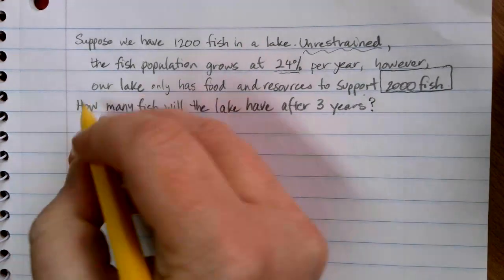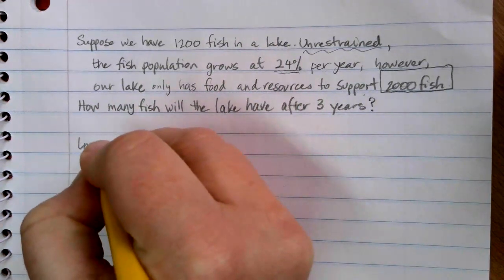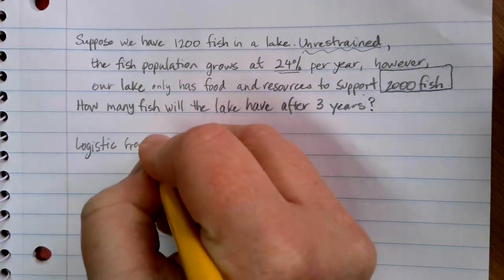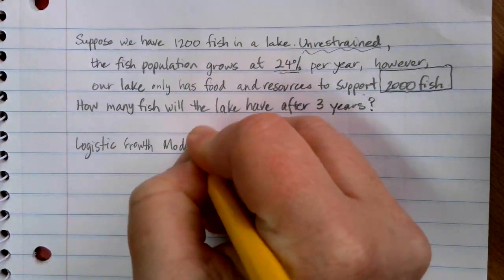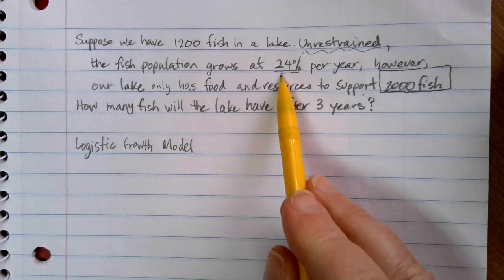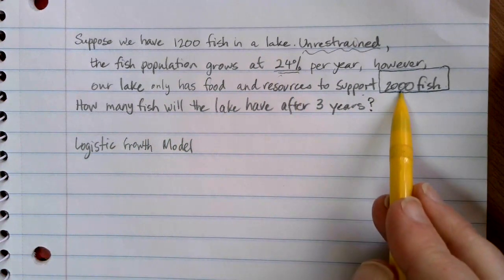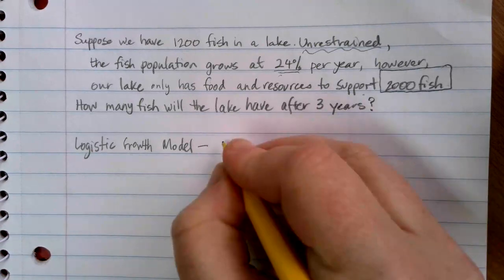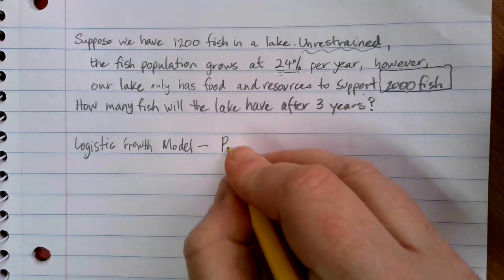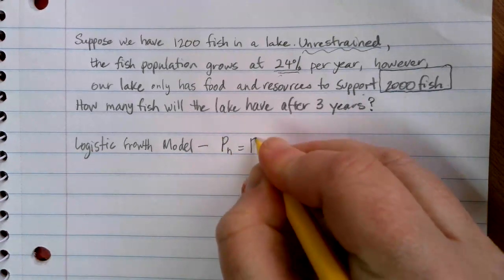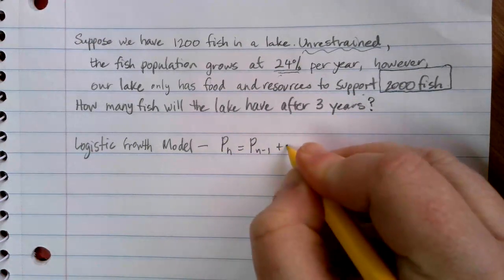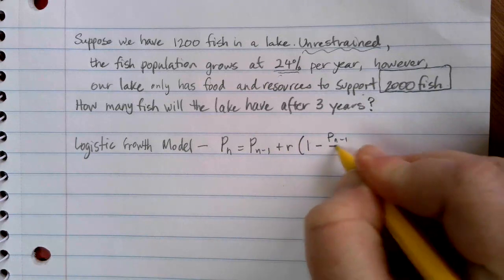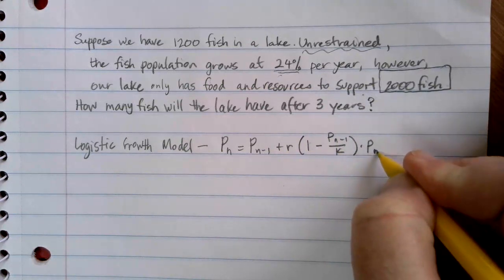So that means that this is best described using a logistic growth model. It has a percentage growth, but there's an upper limiting factor to what's going on. If you recall from the last video, our formula for logistic growth is P_n = P_(n-1) + r(1 - P_(n-1)/K) × P_(n-1).